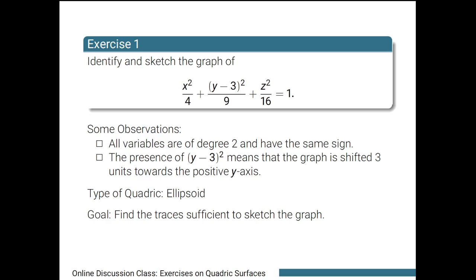Now, we are left to sketch the graph of the surface. We do this by finding sufficient traces that will aid us in sketching. From the equation of the ellipsoid, we may easily identify the planes that we need to consider. All we have to do is find an appropriate choice of value so that the term corresponding to the variable disappears.